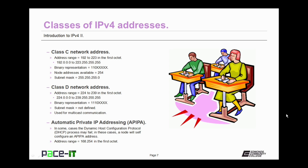Finally, there's a special class of addresses involving Automatic Private IP Addressing, APIPA. In some cases, the Dynamic Host Configuration Protocol, DHCP, process may fail. When that happens, a node or host will self-configure an APIPA address. With an APIPA address, the first two octets are always 169.254. If you see that in your IP configuration, you know you have a DHCP problem.